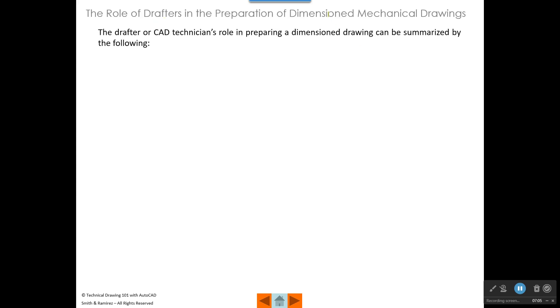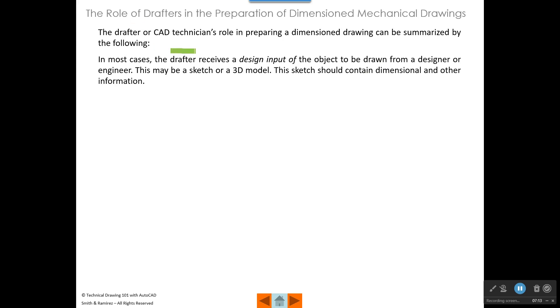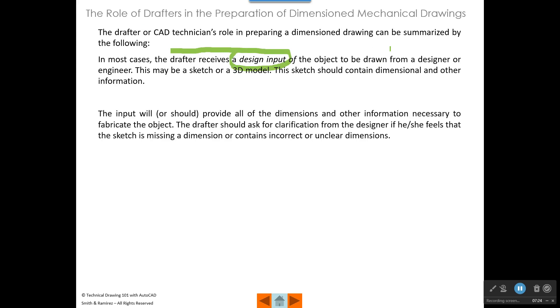So the role of a drafter or CAD technician in preparing a dimension drawing can be summarized by the following. In most cases, the drafter receives a design input of the object, and this could be a sketch. It could be a 3D model. There's various ways they could get their design input. The input will provide all the dimensions and other information necessary to fabricate the object. If it doesn't, you need to go talk to the designer and say, hey, it looks like something's missing here. You also should ask if you think something looks incorrect or unclear on the design input.